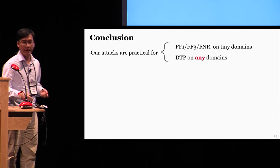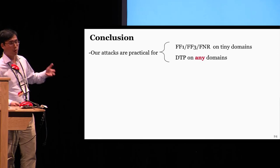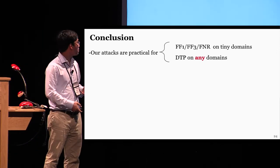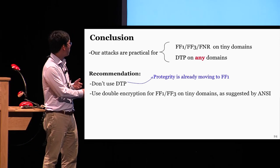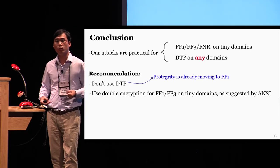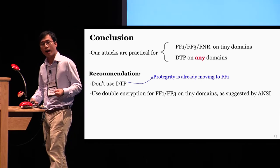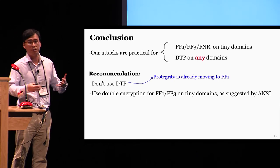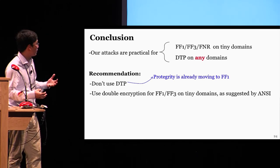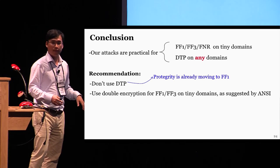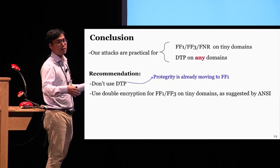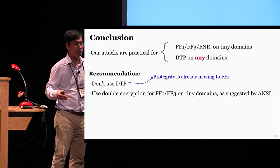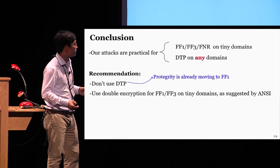In summary, today I have shown some practical attacks on several FPE schemes. To deal with them: if you happen to use FF1 or FF3 in tiny domains, you should use double encryption as suggested by ANSI. For the DTP scheme of Protegrity, it is completely broken, so you should avoid it at all costs. Thank you.